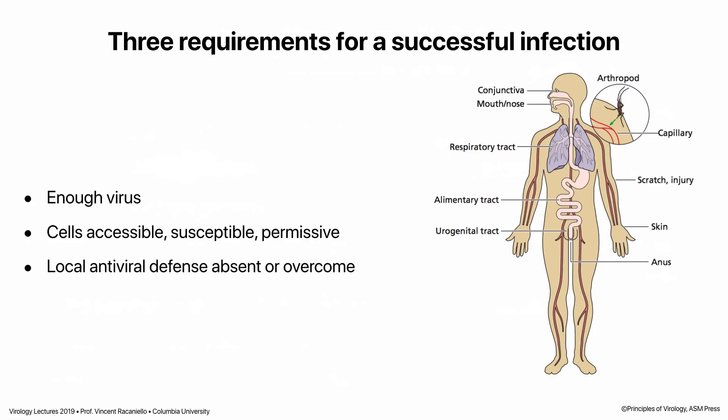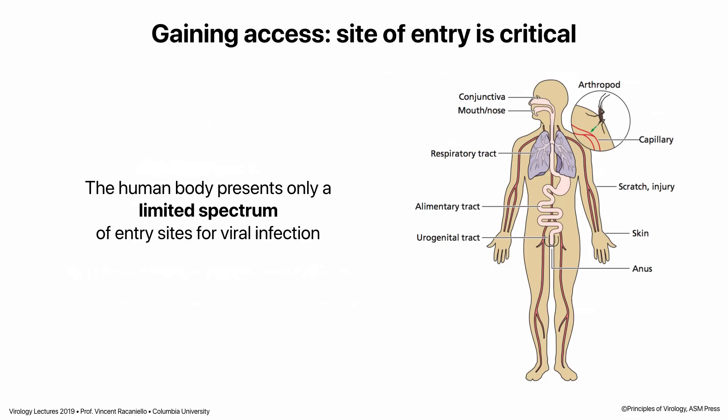For a successful infection in a human, there are three requirements. First, you have to be hit with enough virus — if you inhale one PFU, it's not likely to start an infection. You need enough virus, and that differs according to the virus. The cells initially encountered have to be accessible; they have to be susceptible, having receptors, and permissive — able to replicate the virus. And the antiviral defense is either not there or it has to be overcome.